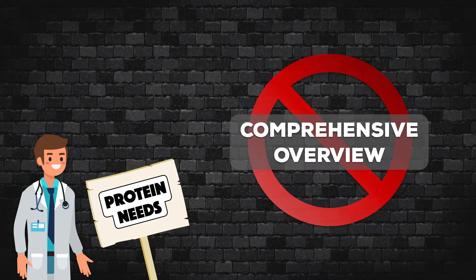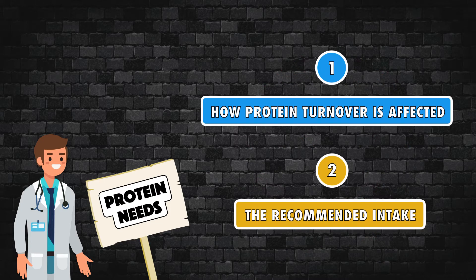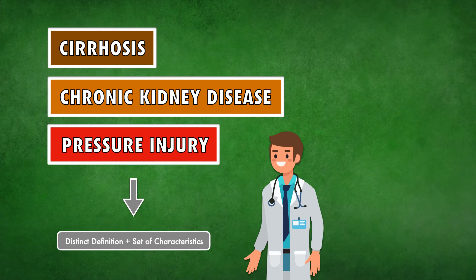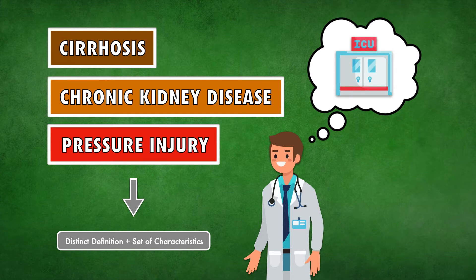The intent won't be to provide a comprehensive overview of the condition — it's really just to outline how protein turnover is affected and discuss the current view on the recommended intake. Unlike the previous conditions we've covered, where there's a distinct definition and set of characteristics, critical illness is a bit more abstract.